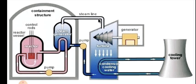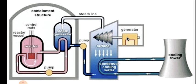The superheated steam flows to the turbine at high pressure and propels it. The high-pressure superheated steam flows through the pipe and hits the blades of the turbine. These blades are connected to the runner, which also starts rotating. The runner is connected to the shaft, so the shaft also rotates. The shaft is connected to the generator, and as it rotates, electricity is generated.